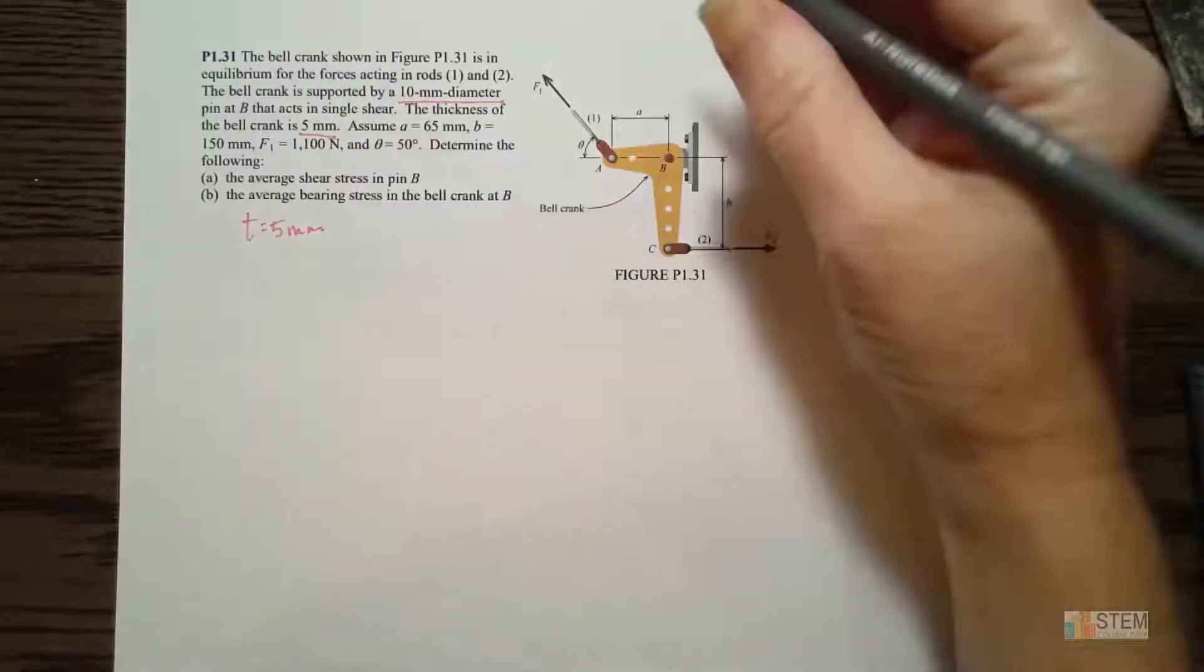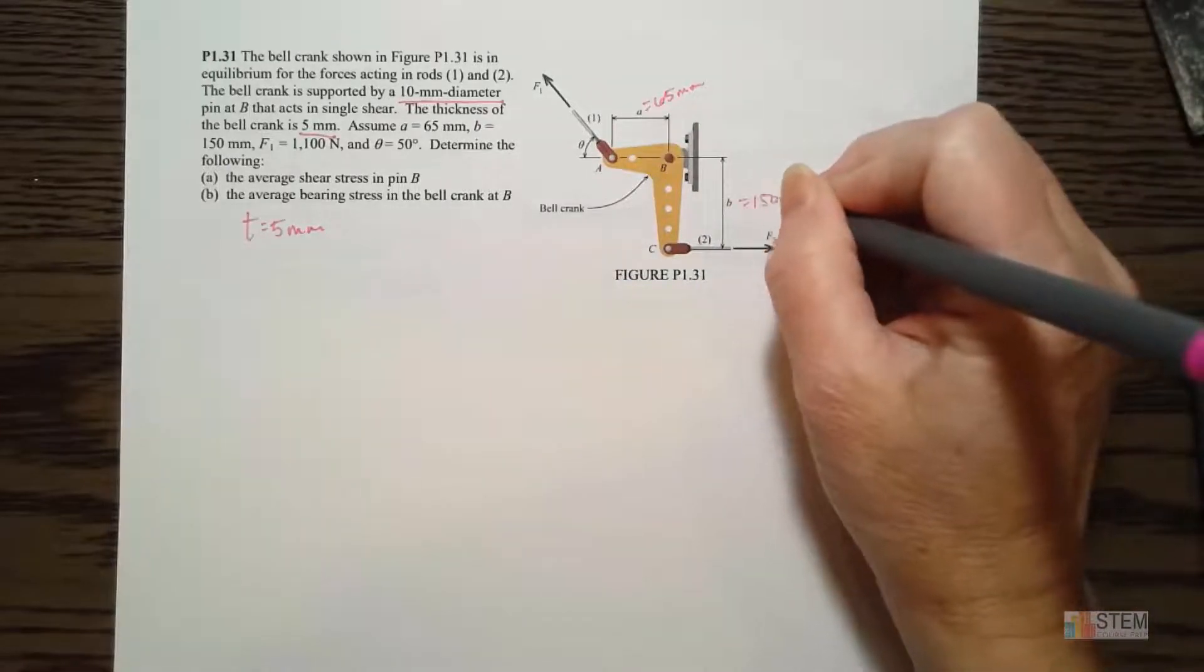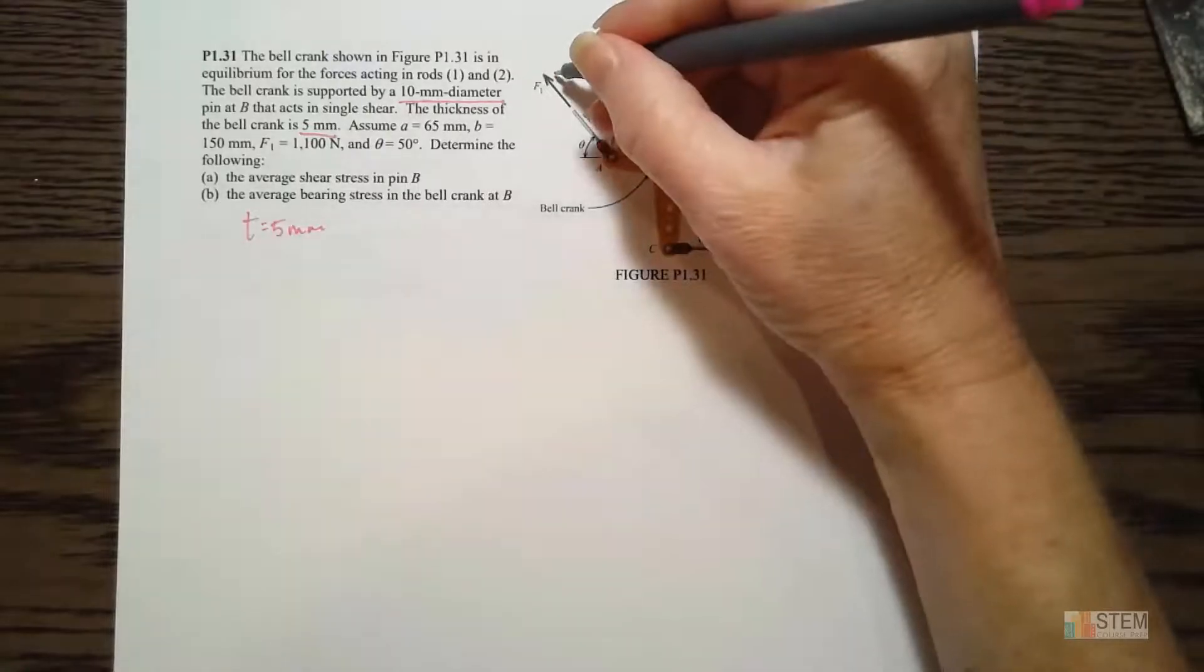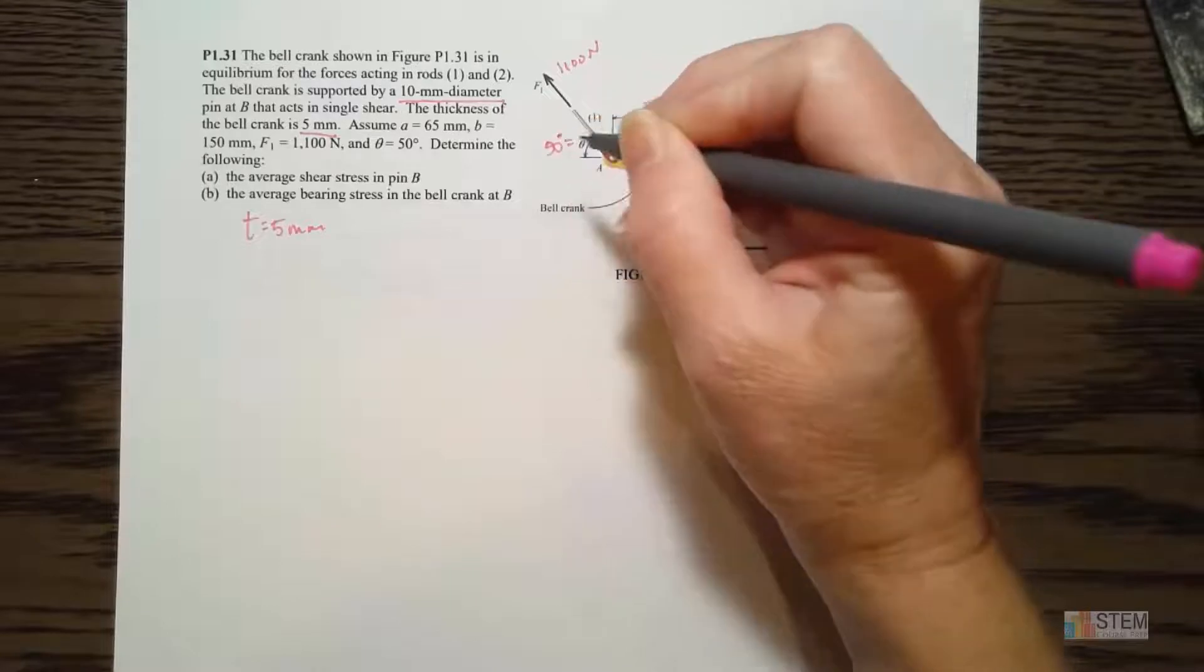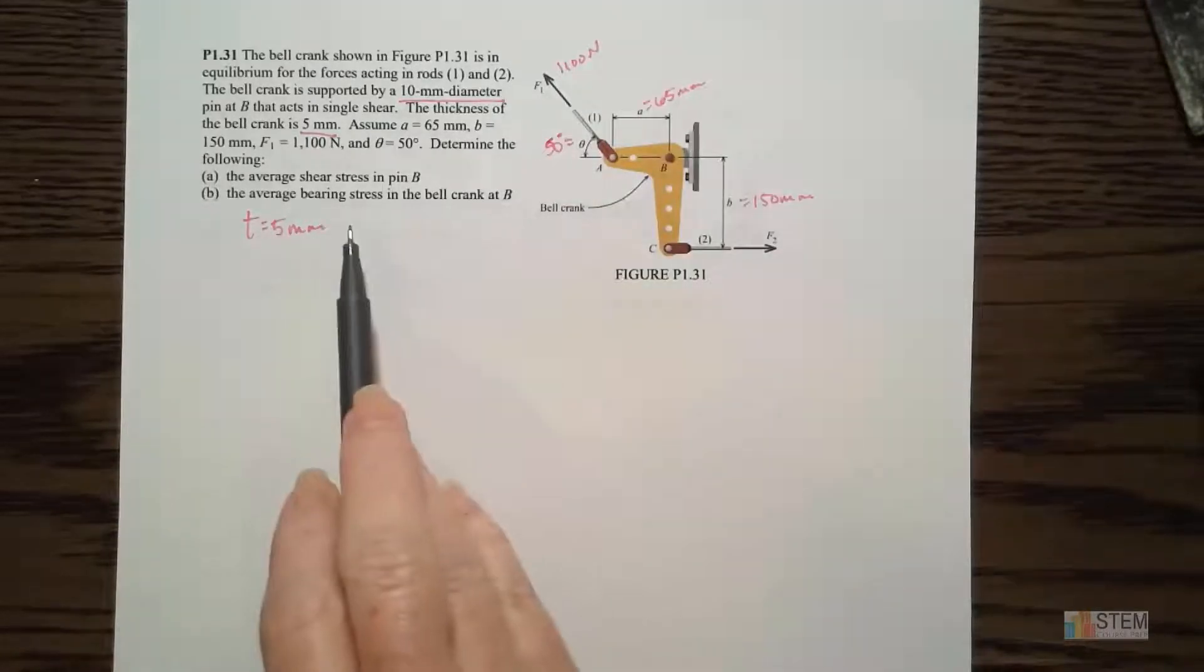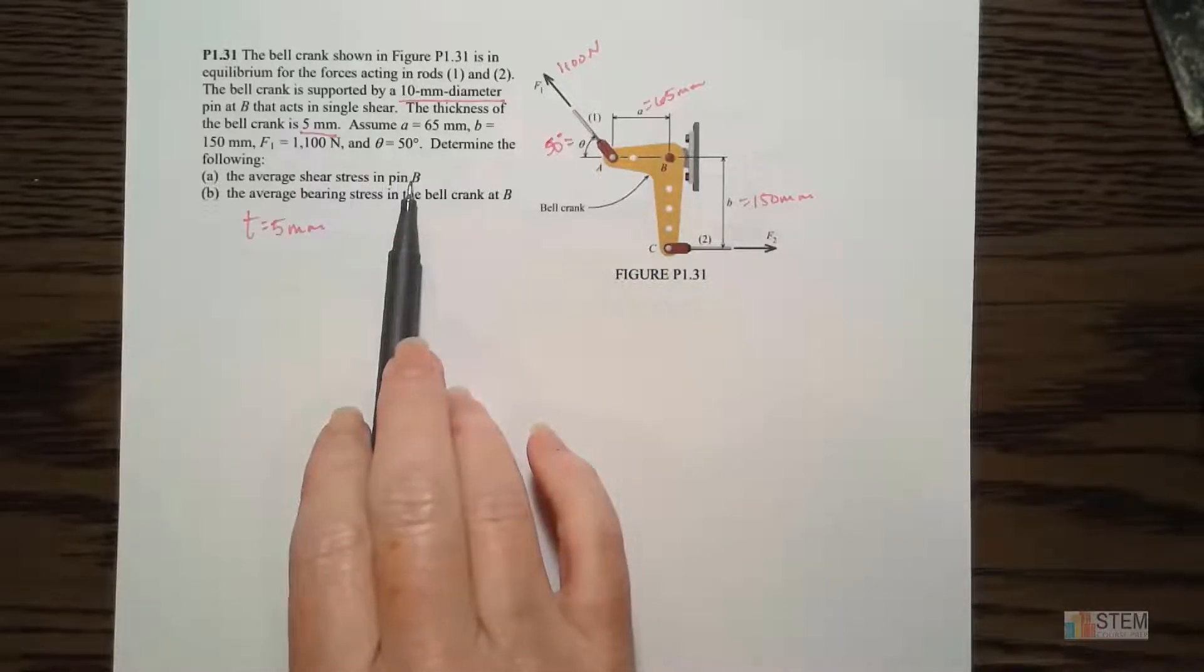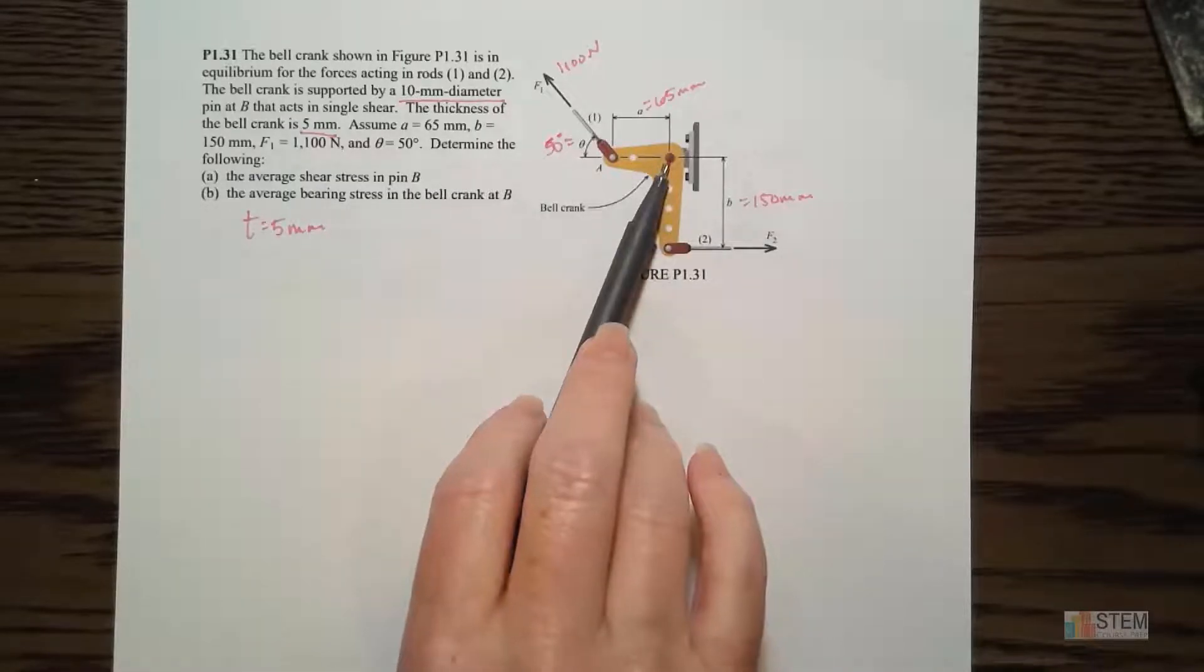We're going to assume A is 65 millimeters, B is 150. And then F1, this is going to be 1100 newtons at 50 degrees. Now we want to find the following: the average shear stress in pin B, and then the average bearing stress at B. So that's what we are looking for.